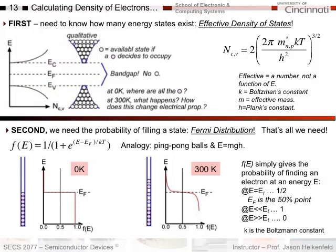Now we're going to move on to part two of the first lecture. In this part two, our whole goal is to figure out how we can determine how many carriers we have — carriers being electrons or holes — and specifically, how we can calculate the concentration of those.